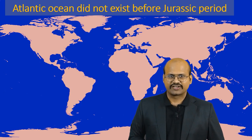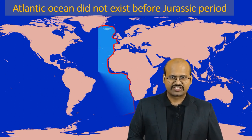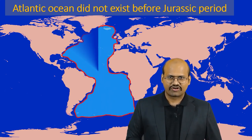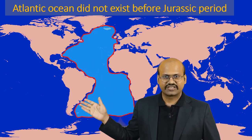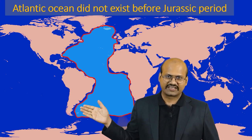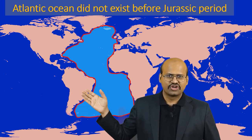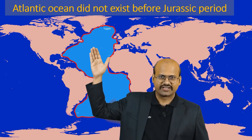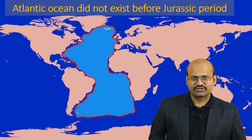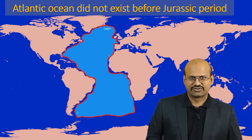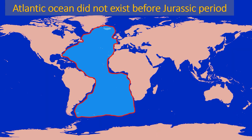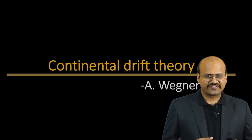The last evidence is the age of the Atlantic Ocean. Study of ocean rocks and ocean floors suggests that the Atlantic Ocean did not exist before the Jurassic Era, that is 200 million years ago. So if there was no Atlantic Ocean before 200 million years ago, then the American continent must have been beside the African continent.